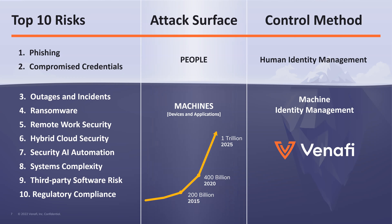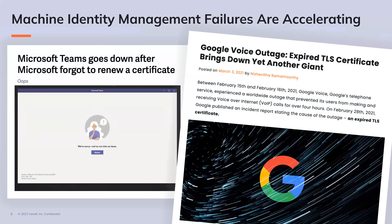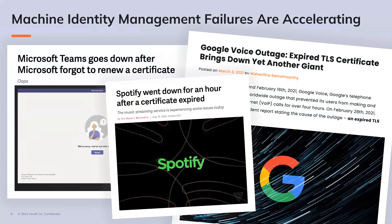Gartner is now recommending that every organization implement an enterprise-wide strategy to manage machine identities, because that is where bad threat actors have successfully penetrated organizations globally. Over the past few years, we have seen even the top tech companies in the world publicly struggle with machine identities — from Microsoft, Google, and Spotify, all having experienced certificate-related outages. Just think about how many people use these services and the exposure and impact these outages have globally.